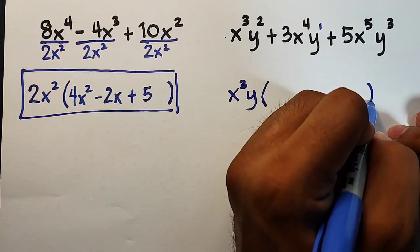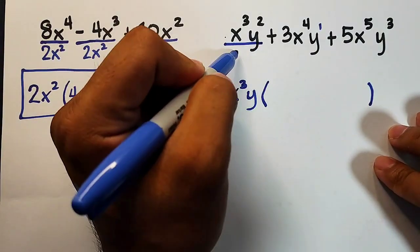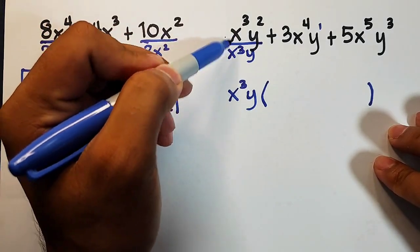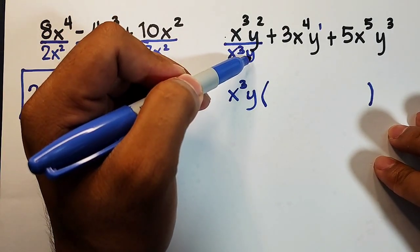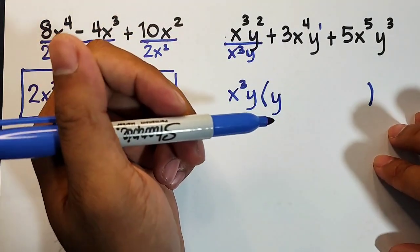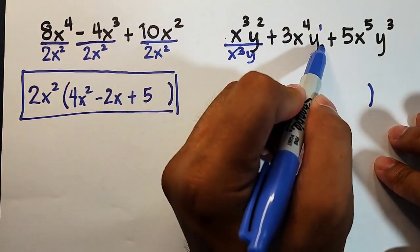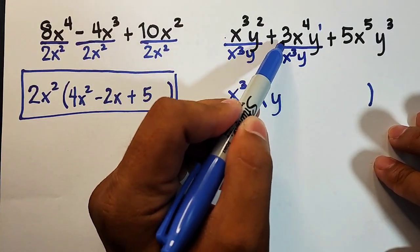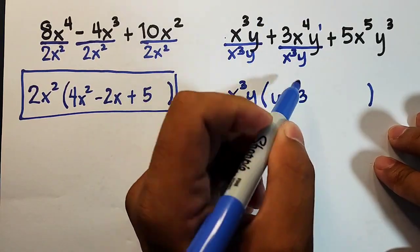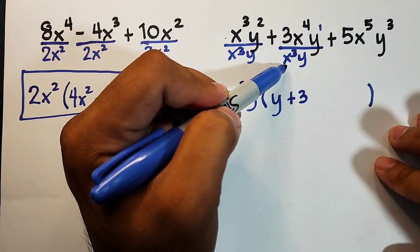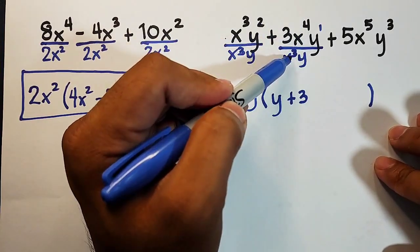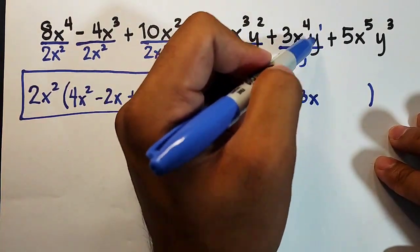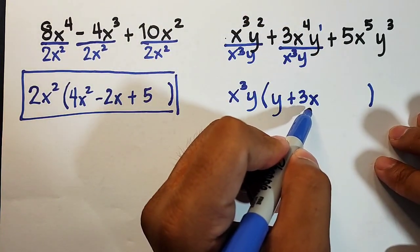So for the other factor in parentheses, divide this by your greatest common factor x³y. x³ over x³ cancels, leaving just y² over y which is simply y. Next, number 3 - divide this by x³y. There's no number below, so 3 divided by 1, plus 3. For the variables, x⁴ divided by x³ is x, and y cancels. So 3x.